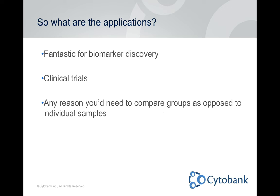So what are the applications of Citrus? It's great for things like biomarker discovery. When you have a group of healthy patients and a group of, for instance, lupus patients, you can say what are the differences between these two groups and Citrus will go through and either pull out the single most defining characteristic or tell you all the differences between those two groups, given the parameters you ask it for. It's also useful for clinical or preclinical trials, or any reason you need to compare groups as opposed to individual samples. VISNE and SPADE are great algorithms for looking at heterogeneity inside a sample, but Citrus fills a gap in looking at large group-wise comparisons.